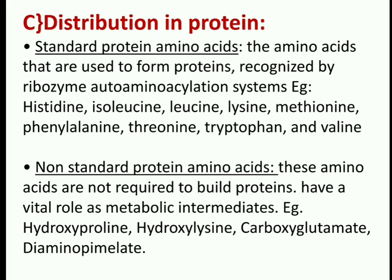Classification of amino acids on the basis of distribution in protein: standard protein amino acids are used to form proteins and are recognized by the ribosomal aminoacyl-tRNA system — examples include histidine, isoleucine, leucine, lysine, methionine, phenylalanine, threonine, tryptophan, and valine.